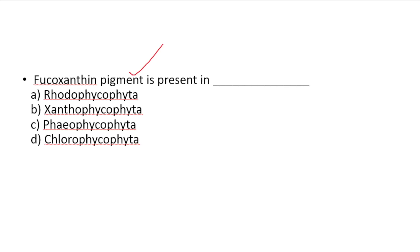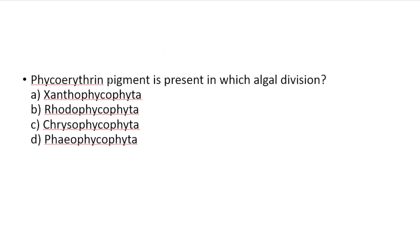Fucoxanthin pigment is present in which division? Answer: Phaeophycopyta. Fucoxanthin is the characteristic pigment of Phaeophycopyta.